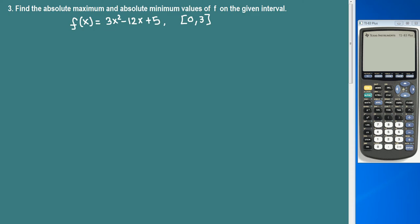We are asked to find the absolute max and min of this function on the given interval [0, 3]. So first thing we need to do is find the critical numbers. We find the derivative of this function: 6x minus 12.